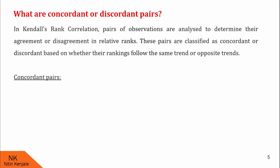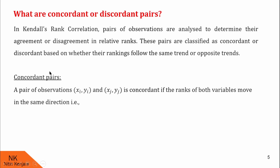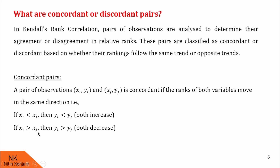First, concordant: a pair of observations (xi, yi) and (xj, yj) are said to be concordant if the ranks of both variables move in the same direction. That is, if xi is less than xj, then yi is also less than yj; or if xi is greater than xj and yi is also greater than yj, then the pairs (xi, yi) and (xj, yj) are concordant.